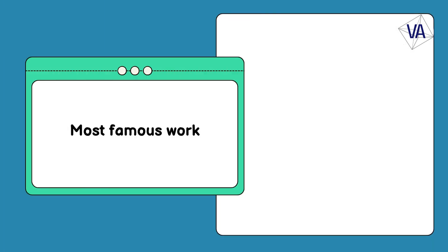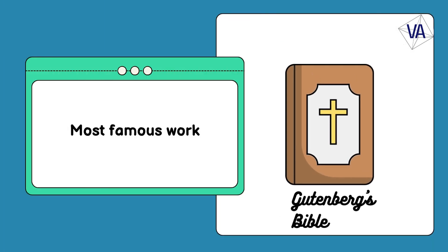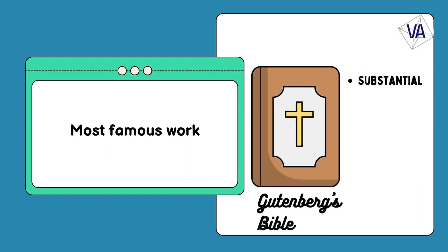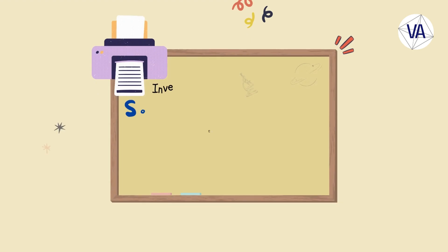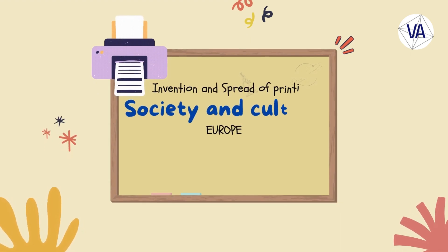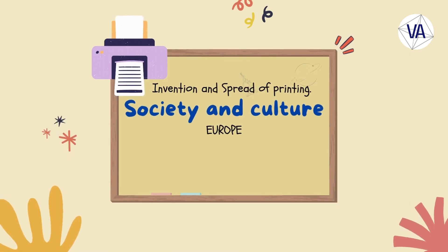Gutenberg's most famous work was the Gutenberg Bible, also known as the 42-line Bible, which was printed between 1452 and 1455. The Gutenberg Bible was the first substantial book printed in the West using movable type, and it is considered one of the most influential and beautiful books in history. About 180 copies of the Gutenberg Bible were printed, of which 49 are still extant today. The invention and spread of the printing press had a profound impact on the society and culture of Renaissance Europe.